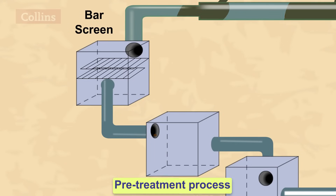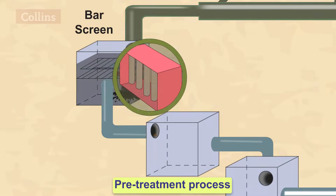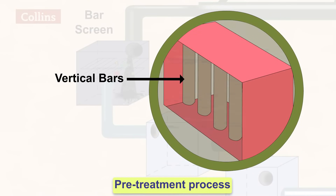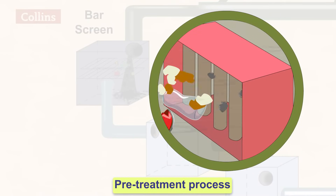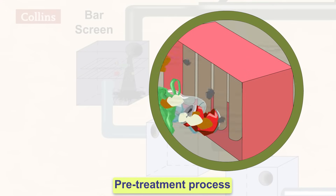The pretreatment process involves the sewage being sent through grids or vertical bars that can remove large solid substances like metal cans, paper and plastic materials.